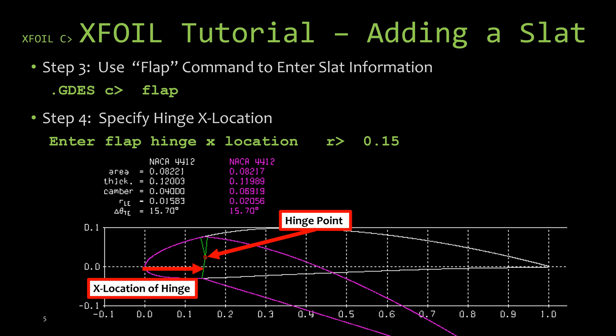So if your leading edge is not at zero zero, or your airfoil is not normalized to a chord of one, this value is not going to be the same as the percentage of the chord.